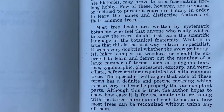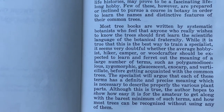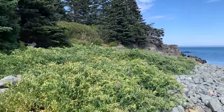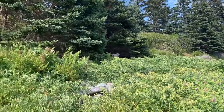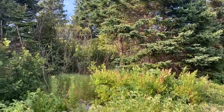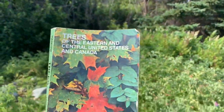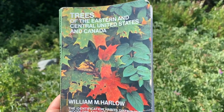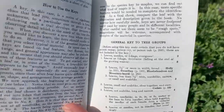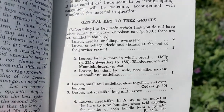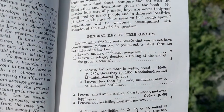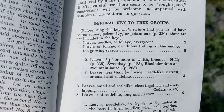In this video, I'm going to walk you through how to key out a plant in Harlow's Tree Guide. I'm on the beautiful coast of Maine, and I've been hiking around with my field guides in my backpack. I've been noticing there's a lot of this type of tree right here along the coast, so I thought I'd take out my handy dandy Harlow's Tree Guide and see if I can key them out. First, I'm going to turn to page 25, where the general key to the tree groups starts, and go through the guide number by number.